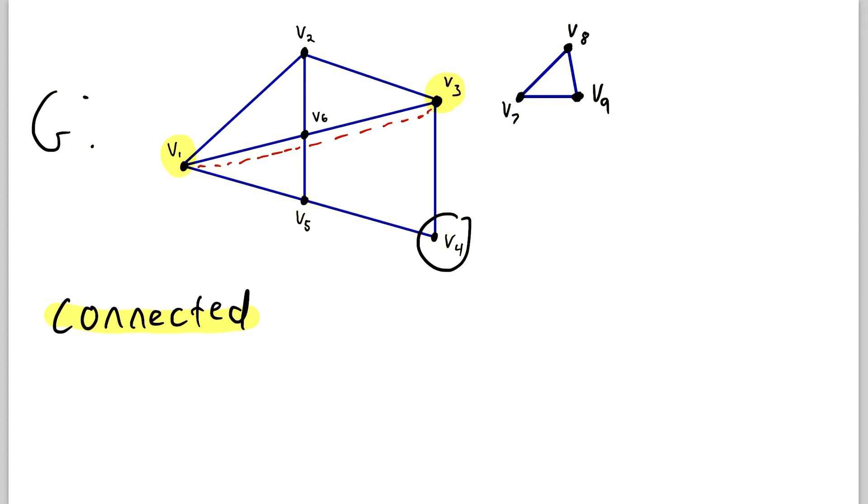Similarly, two vertices like v4 and v2 are also connected because there exists a path that connects the vertices. For example, one of those paths goes from v2 to v6, then from v6 to v5, and then from v5 finally to v4. That path connects the vertices v2 and v4, thus v2 and v4 are connected.